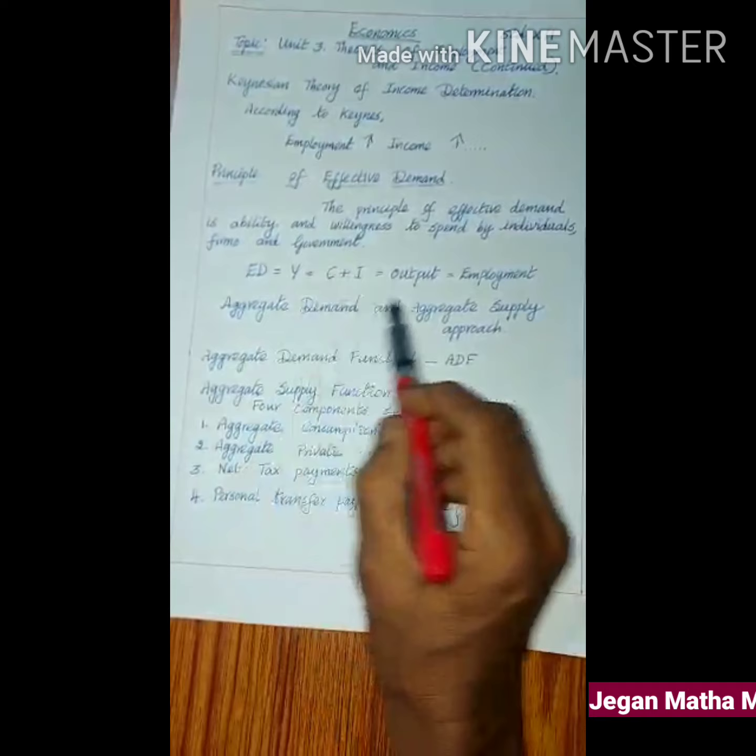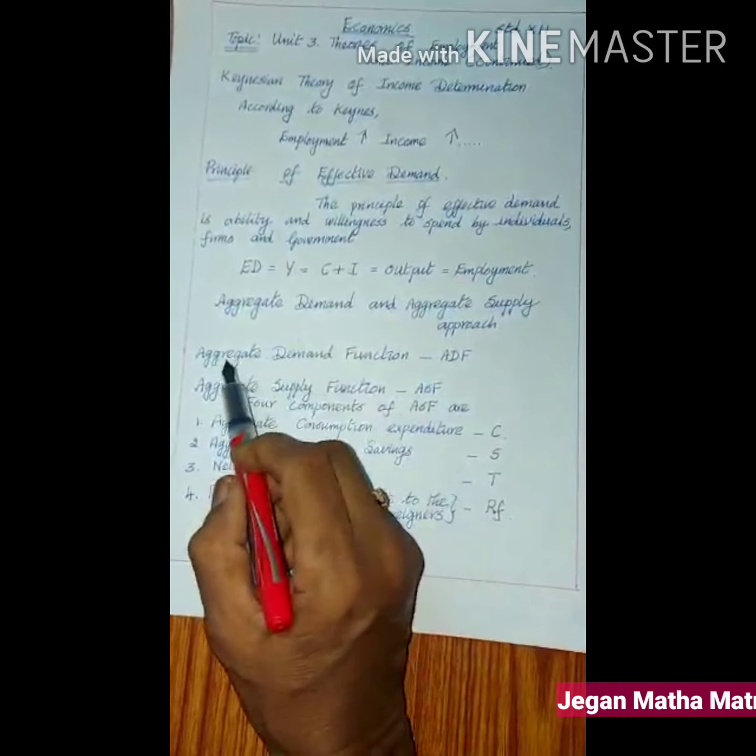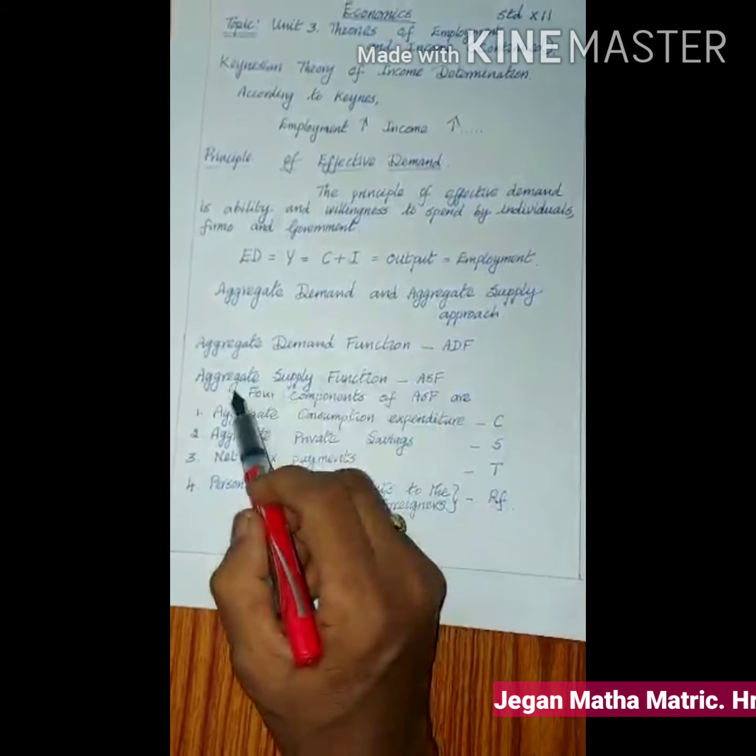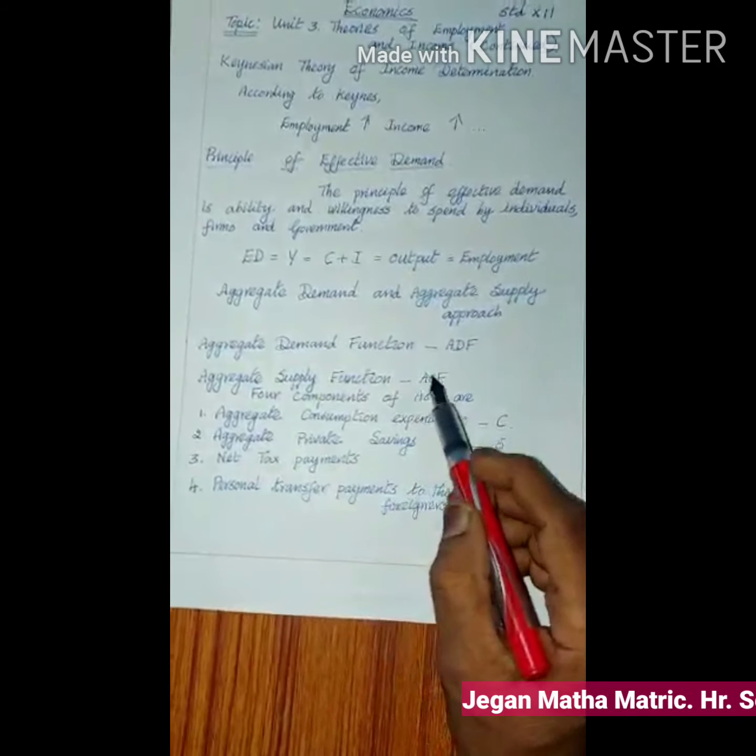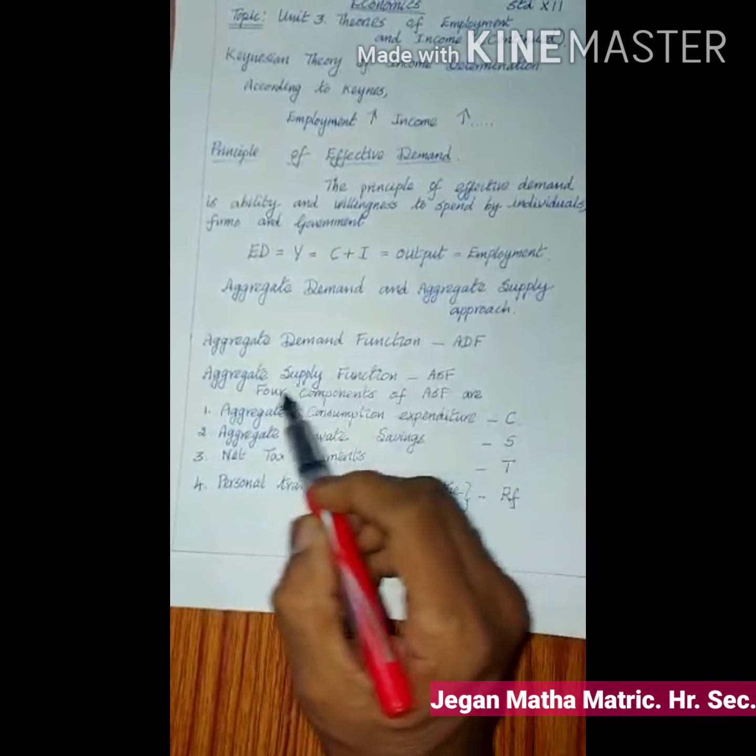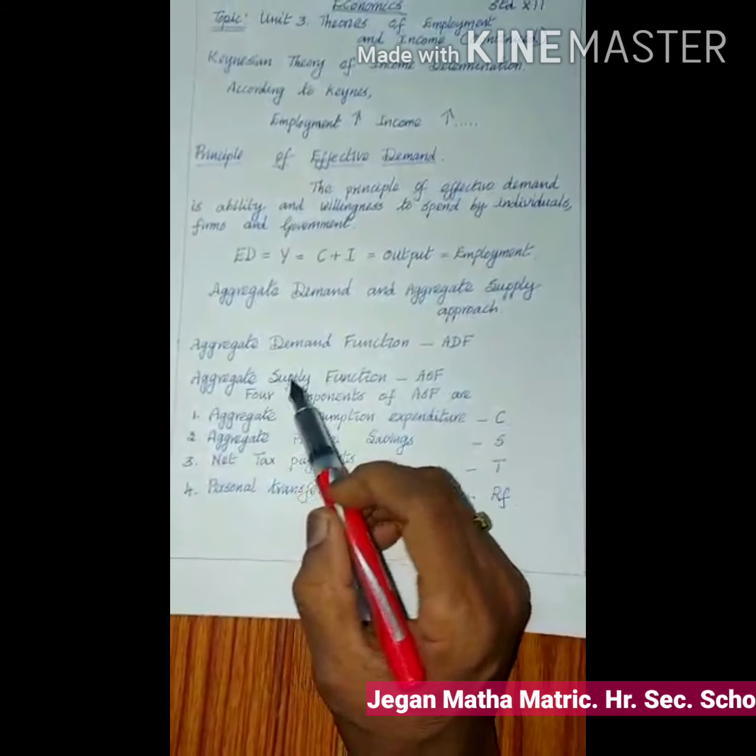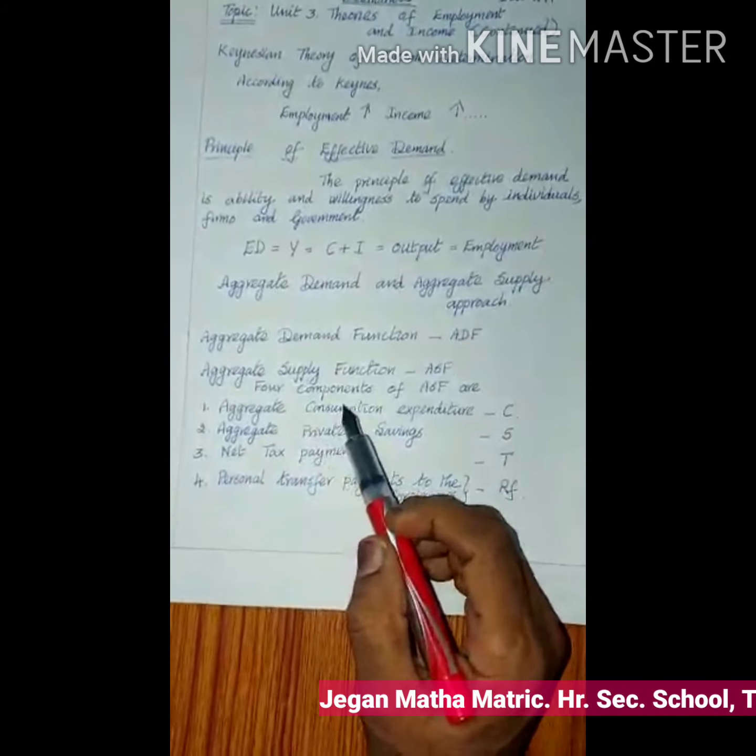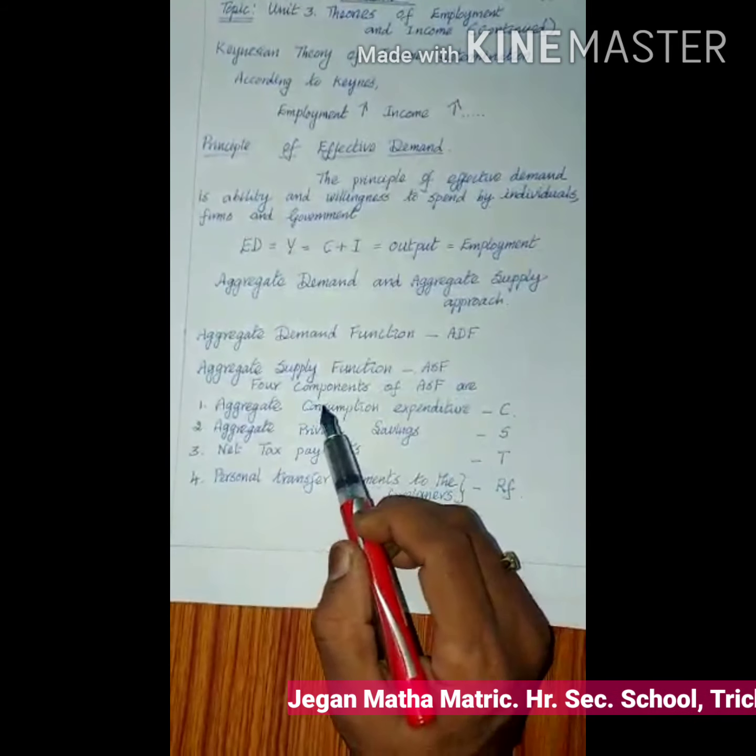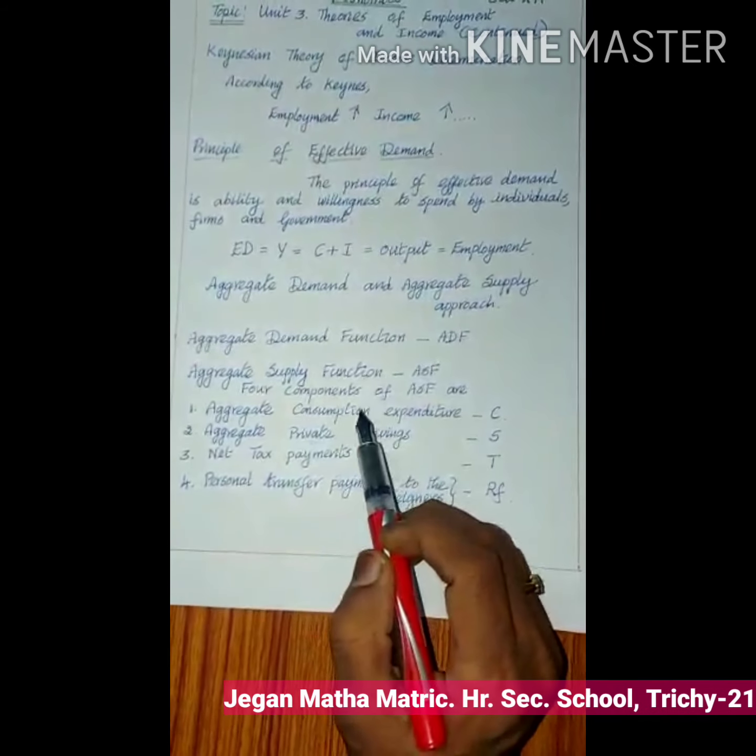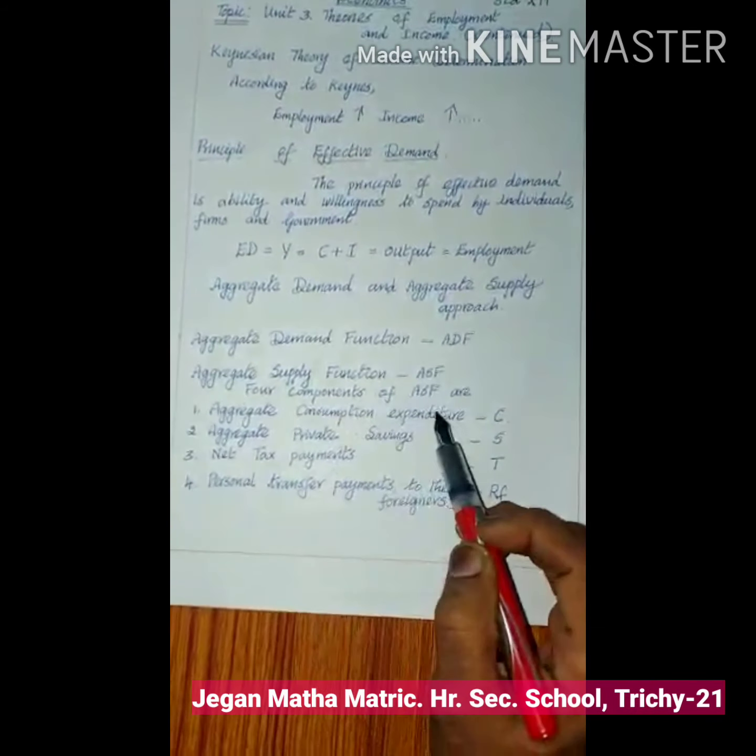Keynes called these two factors aggregate demand function (ADF) and aggregate supply function (ASF). A function is the link between two or more variables. We have already learned aggregate demand function. Let us learn today aggregate supply function.